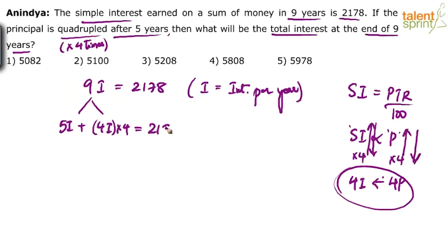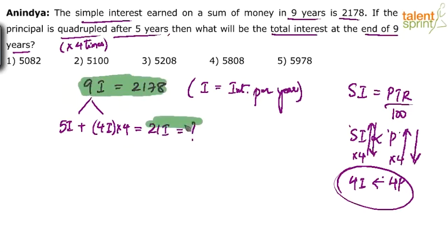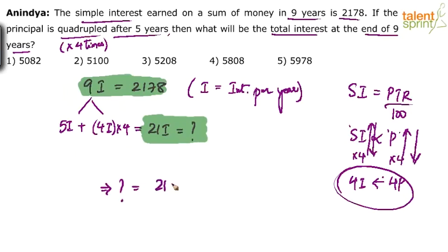So the total interest is 5i plus 16i, which equals 21i. The question gives us 9i = 2178. So 21i equals what? Cross multiply and you get: 21i × 2178 divided by 9i. The i cancels out, and the answer is 5082.